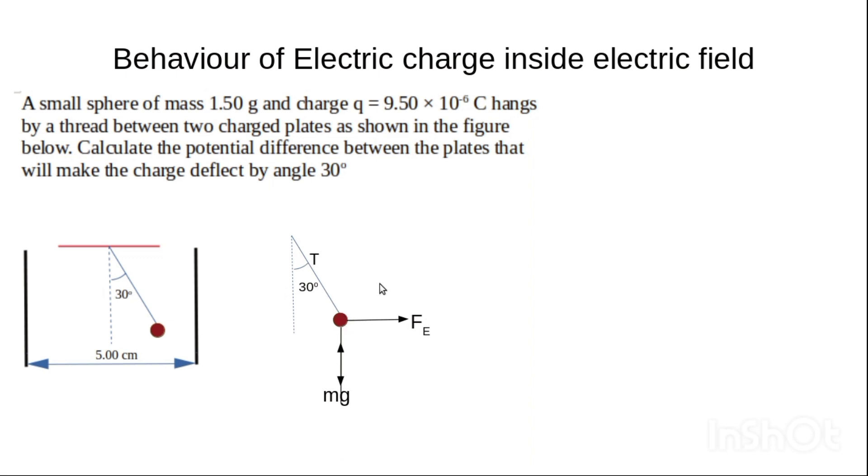This tension can be resolved along this direction, which gives us T cos 30. You can see that this is the T, this is the adjacent and hypotenuse. This same T can be resolved along this direction, giving us T sin 30. As long as this system is in equilibrium, this force must balance this force.